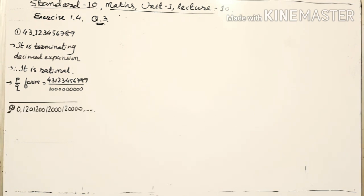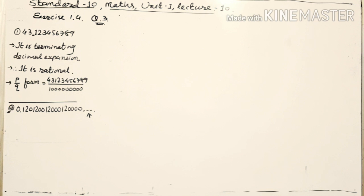The next number is 0.120120012000120000... After the decimal point, the number does not finish — it goes on and on. Since after the decimal point it is not finished and continues, it is a non-terminating number.